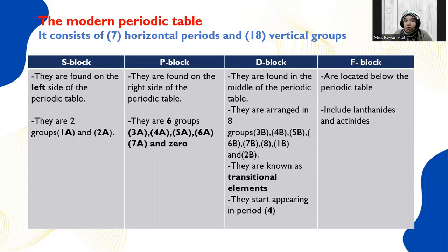The second block is P block, found on the right side of the periodic table. It contains six groups starting from 3A to group 0 or group 18, which contains the noble gases — 3A, 4A, 5A, 6A, 7A, and 0. D block is located in the middle of the periodic table and consists of ten groups starting from 3B till 2B: 3B, 4B, 5B, 6B, 7B, then three columns called group 8, then 1B and 2B. The elements of D block are called transitional elements, starting from period 4.